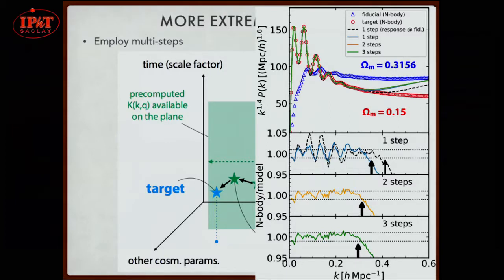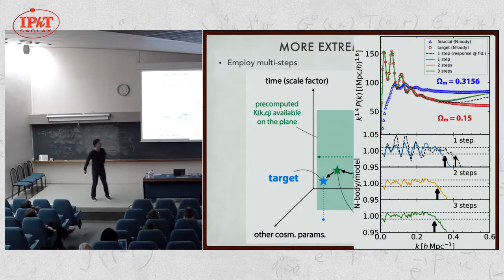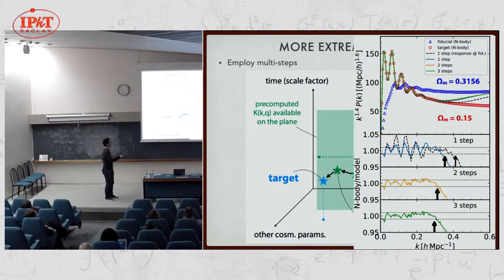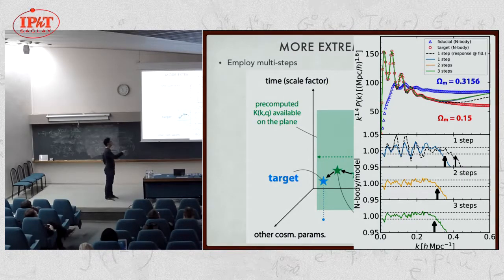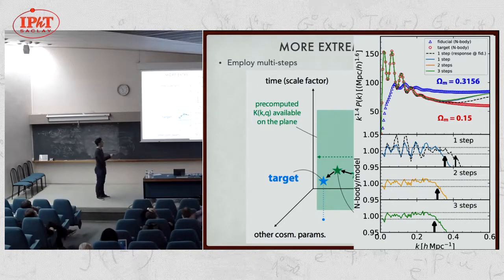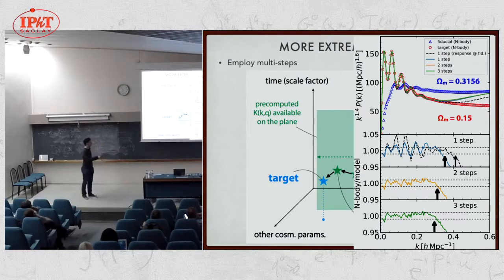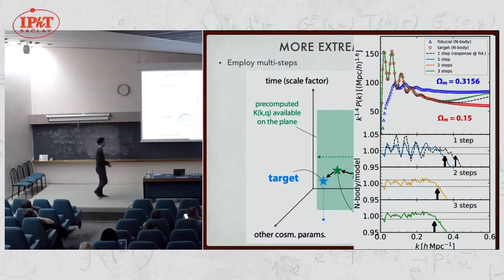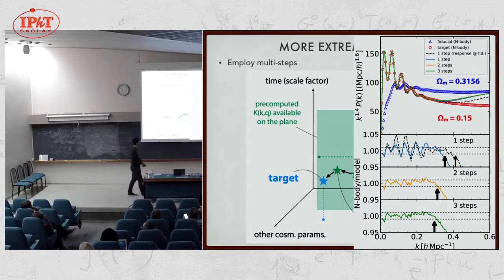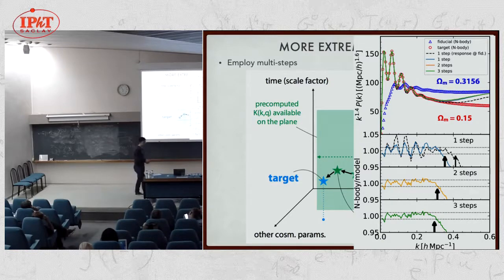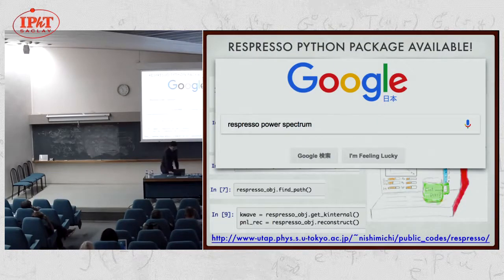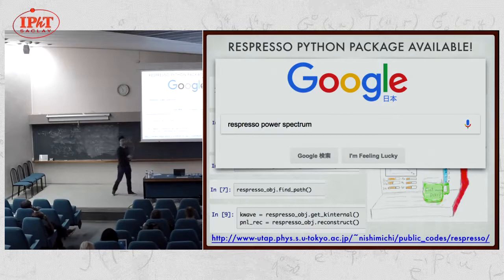This is because omega matter is one of the most least constrained parameters. And also, it affects a lot the shape of the power spectrum. We can make an immediate prediction of the response function over this plane. Using that, we gradually shift the cosmological parameter from here to there. Let's see the result. Now I want to make a prediction for an extremely small omega matter case, 0.15. With a single step reconstruction, the ratio is very noisy. However, once we put intermediate steps, I can have a more controlled prediction. With two or three steps, the results are kind of convergent. So, we can make a prediction for this very distant cosmology.